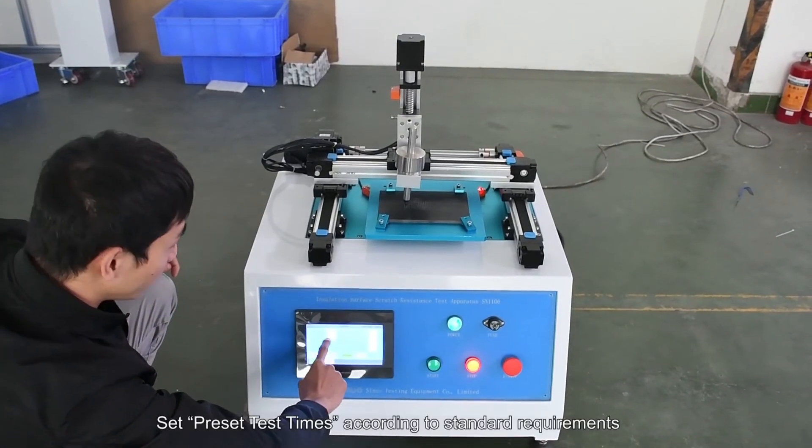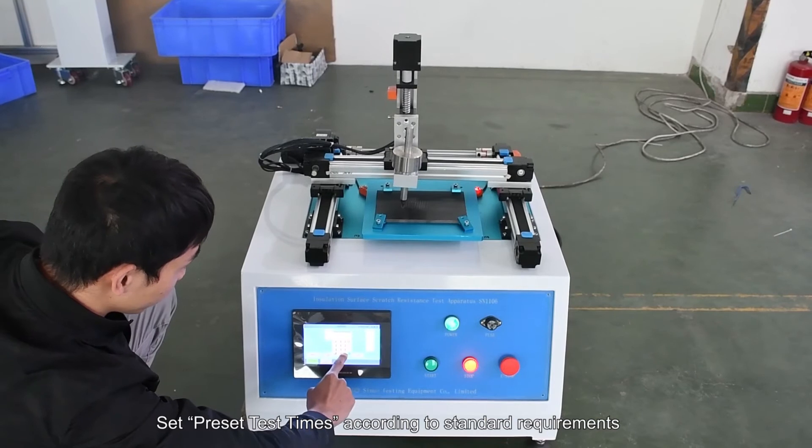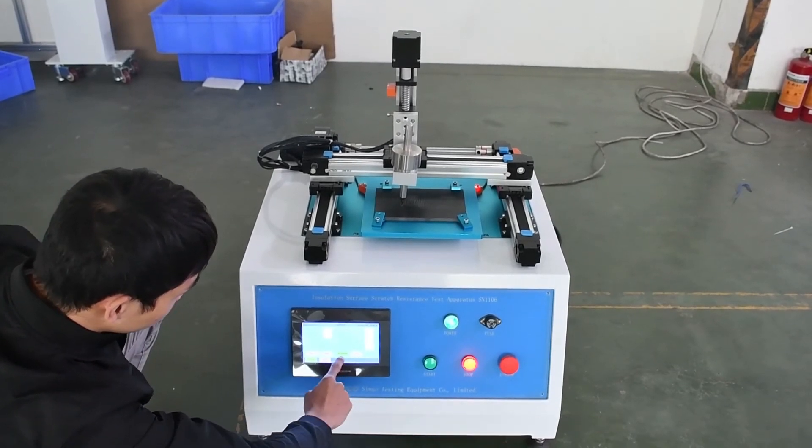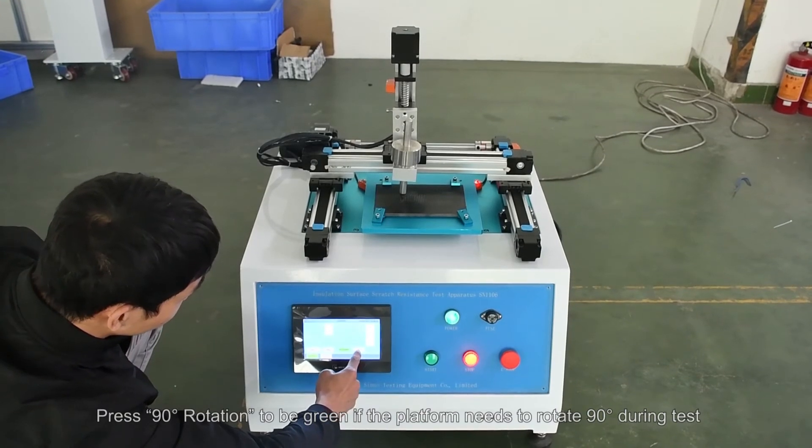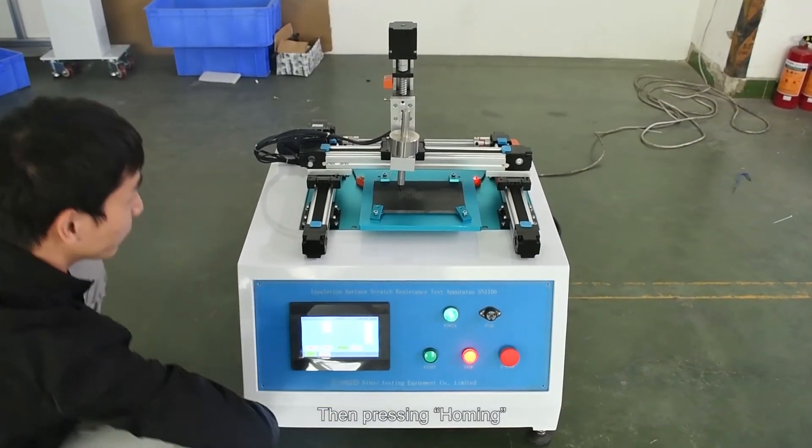Set preset test times according to standard requirements. Press 90 degrees rotation to be green if the platform needs to rotate 90 degrees during test. Then press homing.